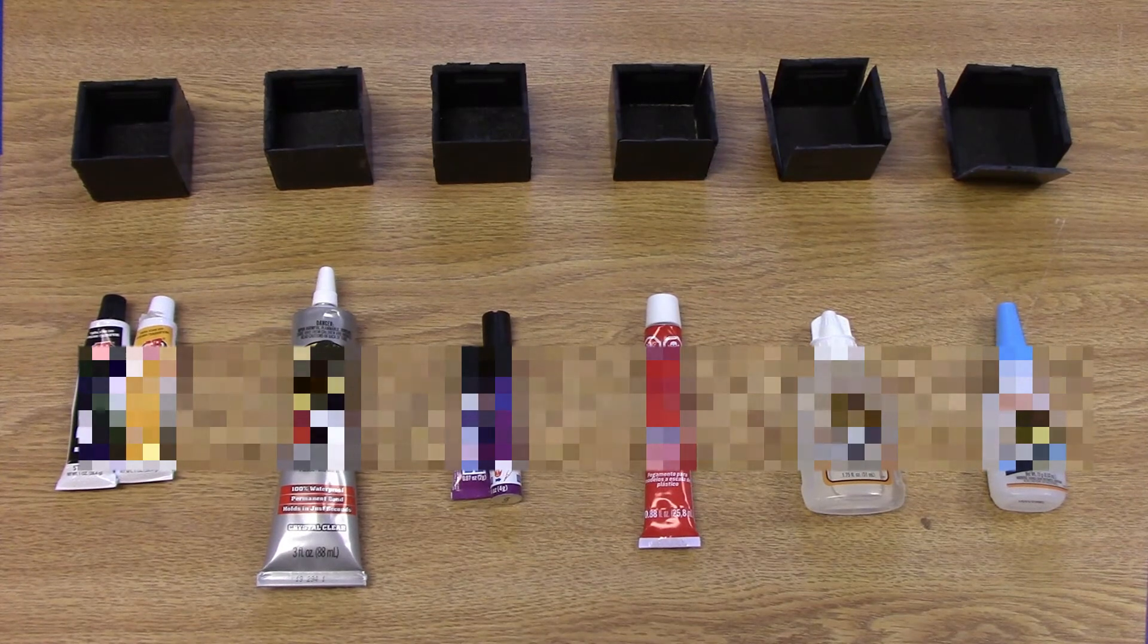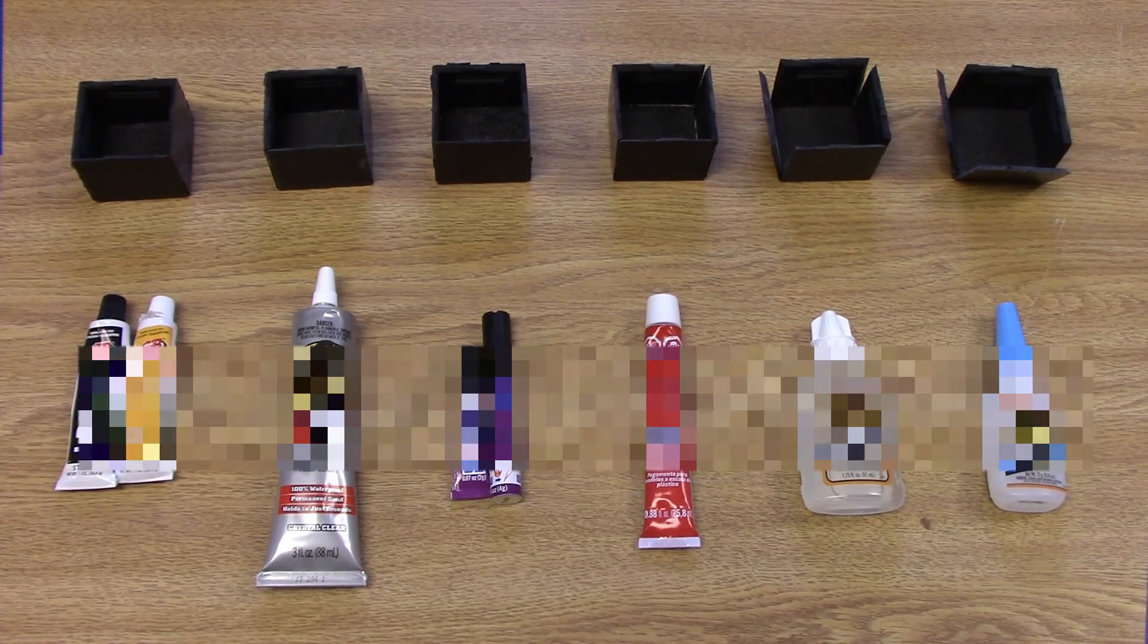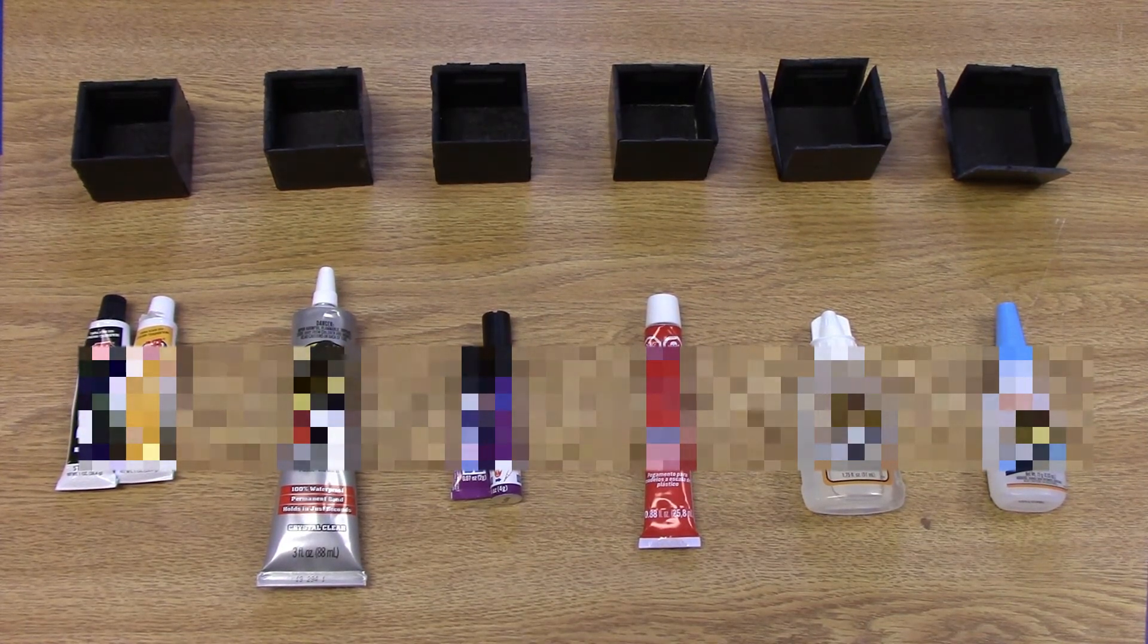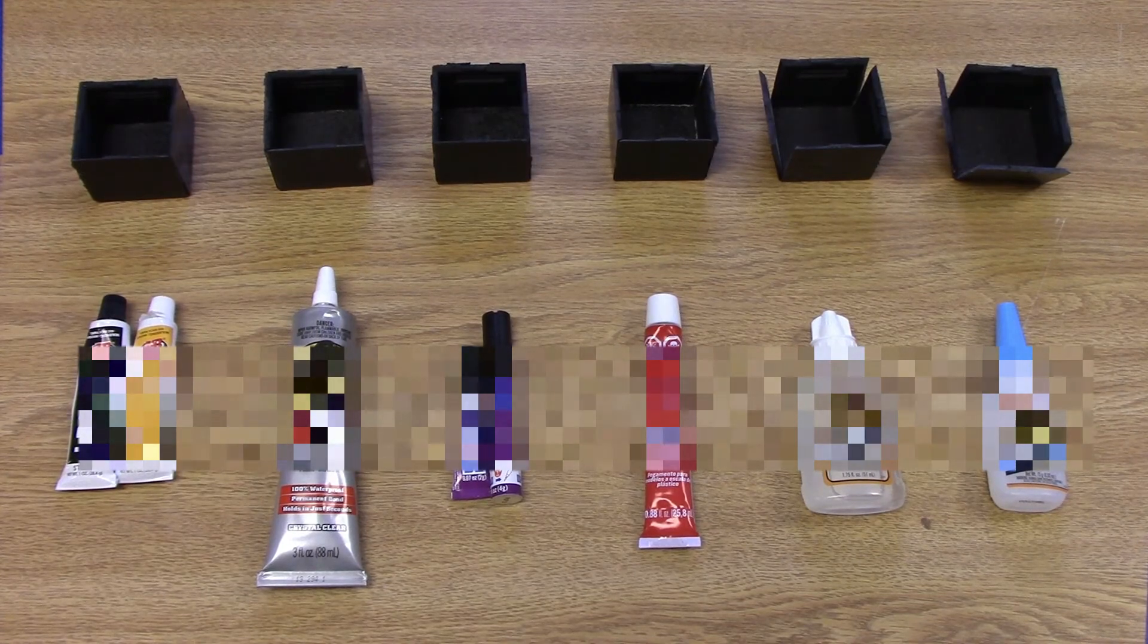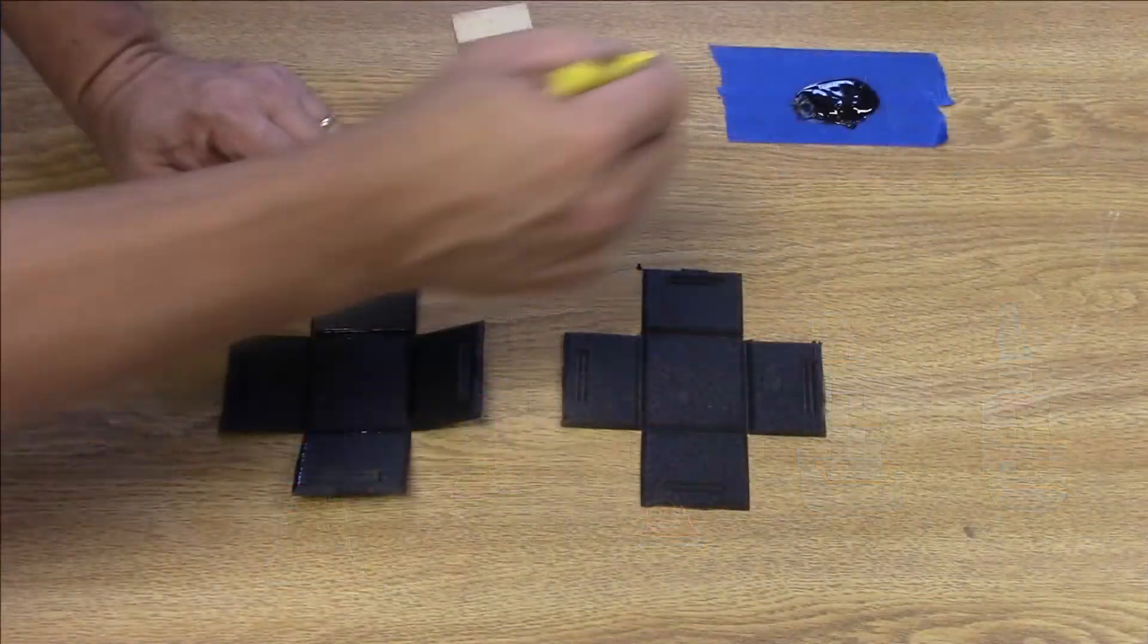After testing a number of different types of glue, I determined that the two-part epoxy was the best solution for bonding the sides of the bins, despite the time involved in mixing the two parts.